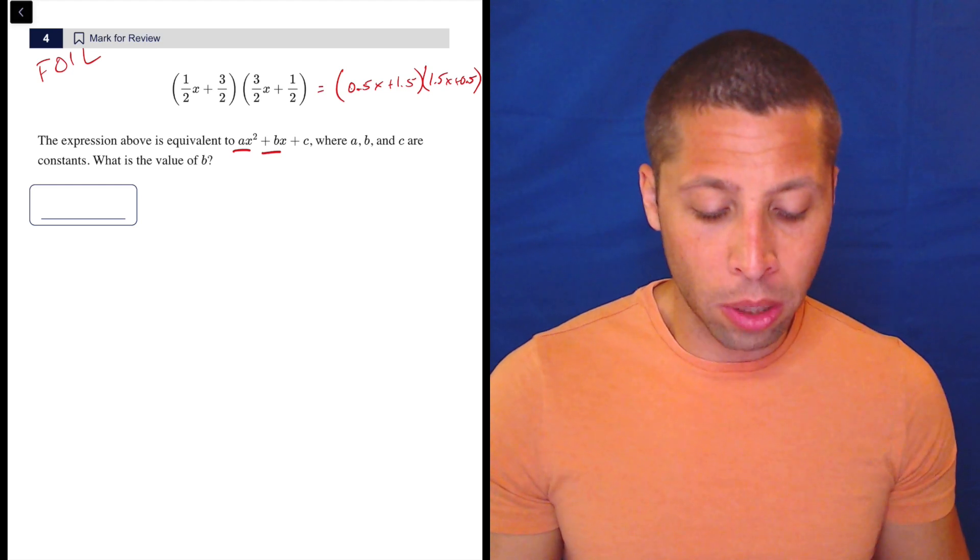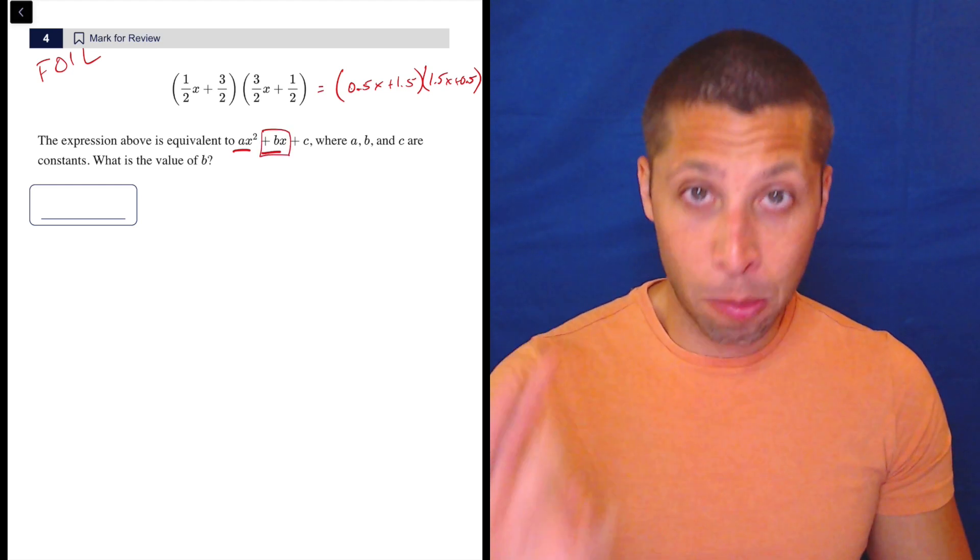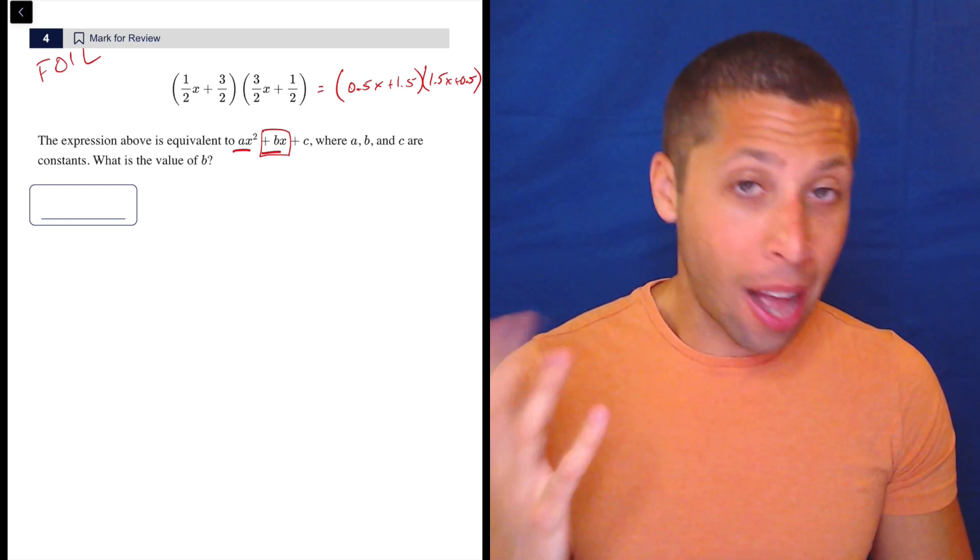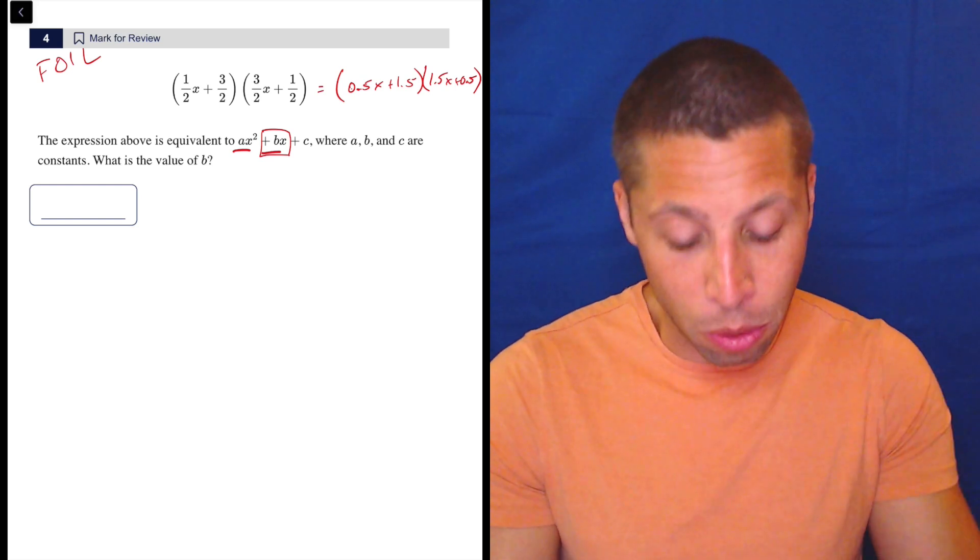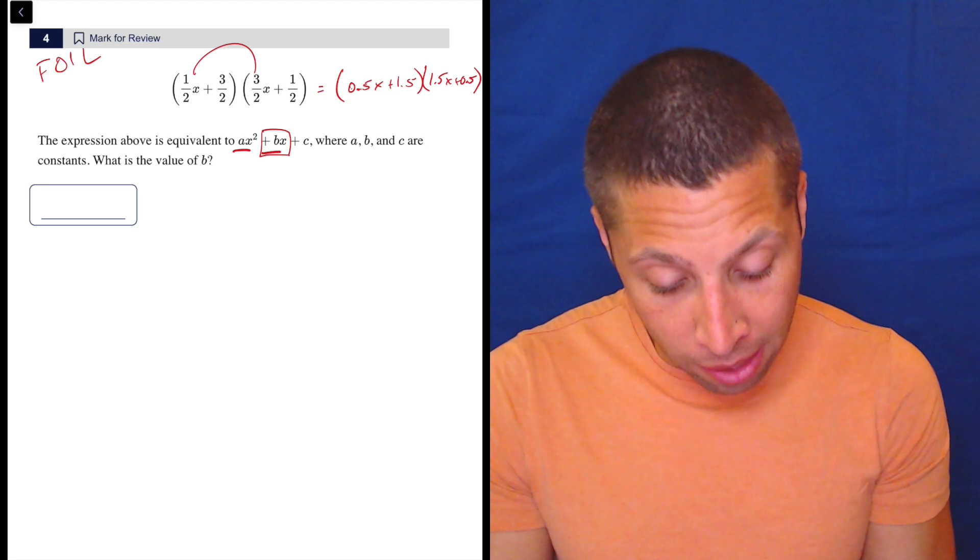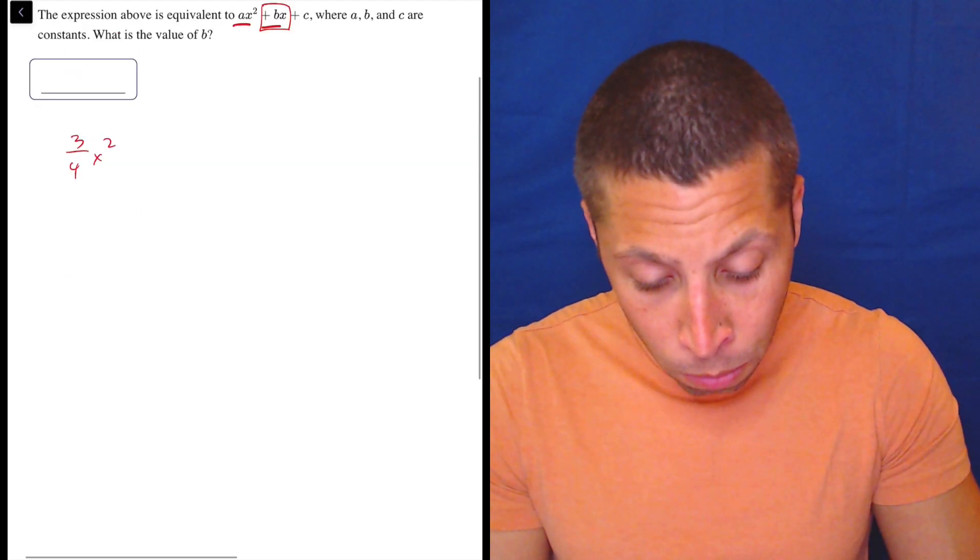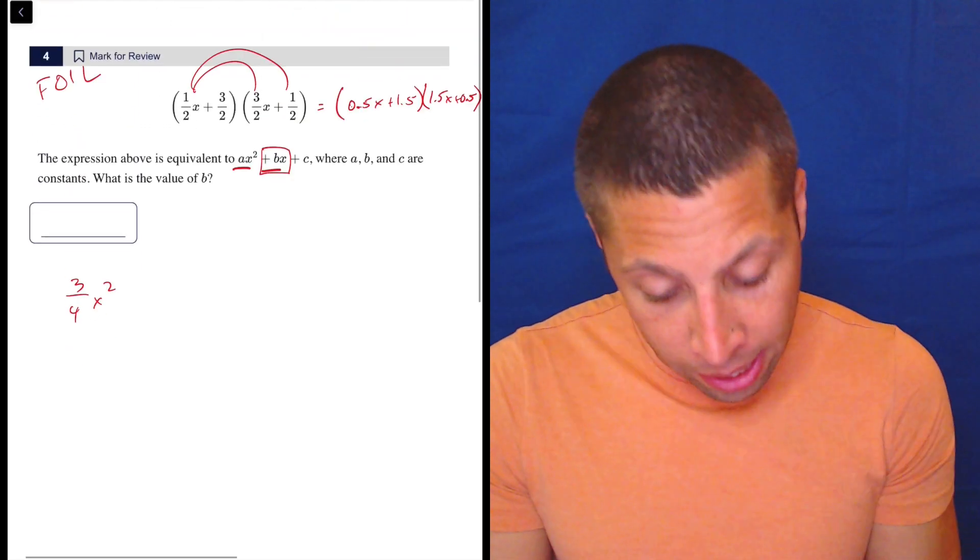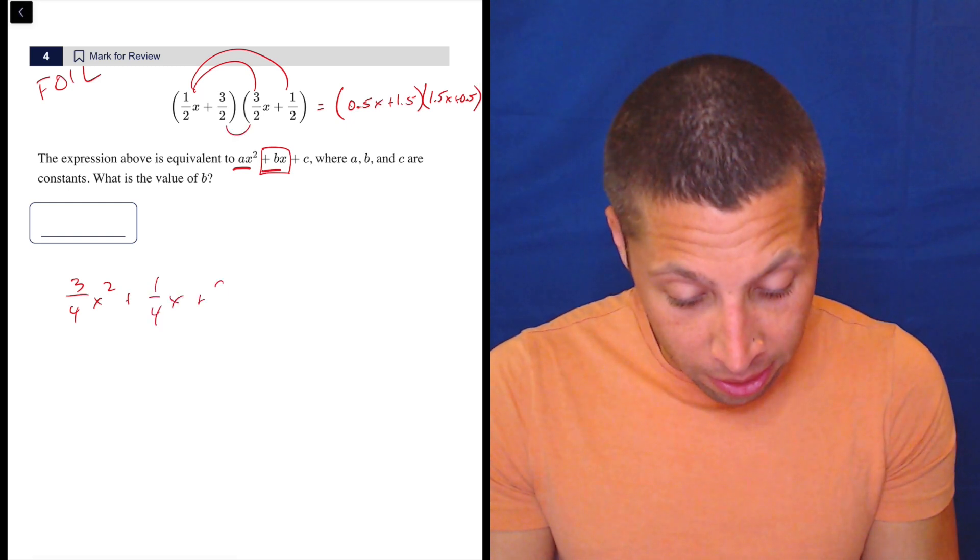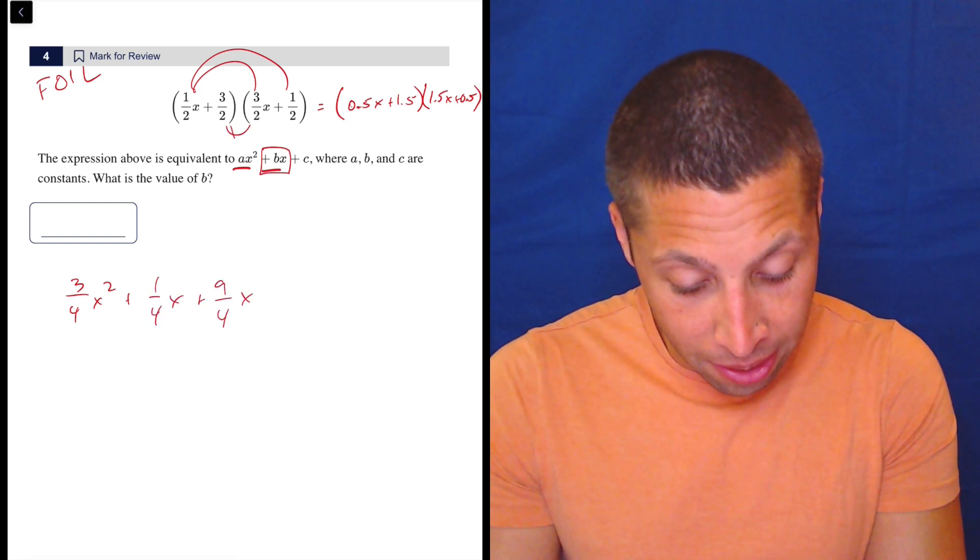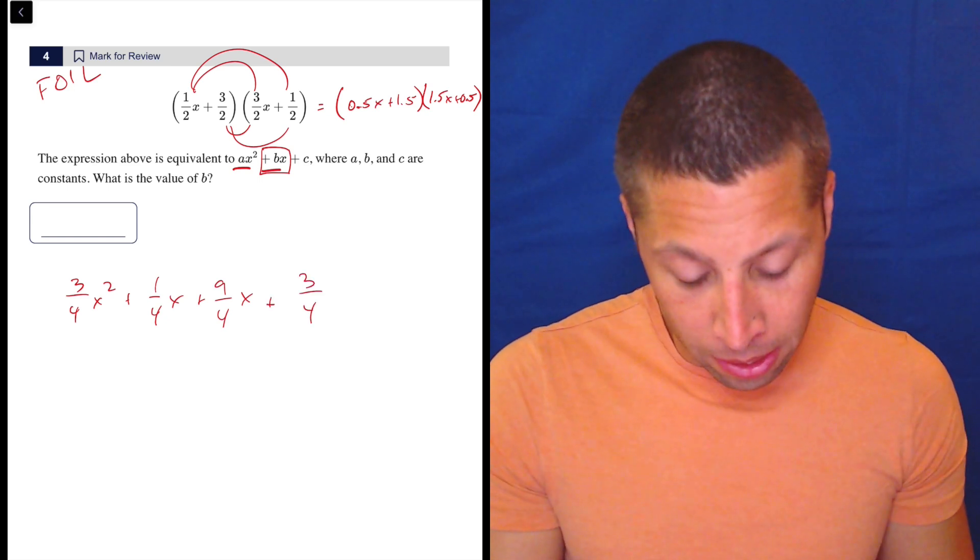You could take a shortcut here where you know how to build the B part specifically. I'm just going to do the whole thing because I don't trust myself to do it right. So first is 3/4 X squared. Outer is 1/4 X. Inner is 9/4 X. Last is 3/4.